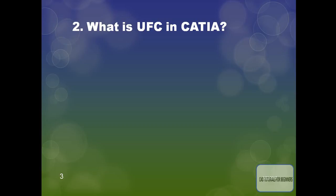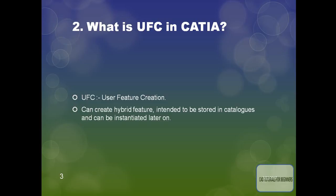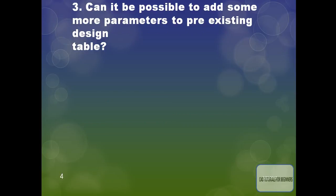What is UFC in CATIA? The User Feature Creation in CATIA can create a hybrid feature intended to be stored in catalogs and can be instantiated later on. This is the User Feature Creation in CATIA.